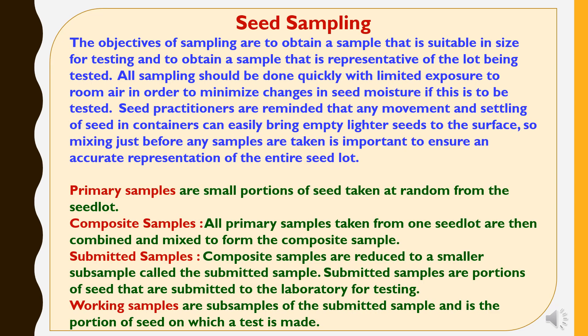Now seed sampling. The objectives of sampling are to obtain a sample that is suitable in size for testing and to obtain a sample that is representative of the lot being tested. All sampling should be done quickly with limited exposure to room air in order to minimize changes in seed moisture if this is to be tested. Seed practitioners are reminded that movement and settling of seeds in containers can easily bring empty or light seeds to the surface, so mixing just before samples are taken is important to ensure an accurate representation of the entire seed lot.